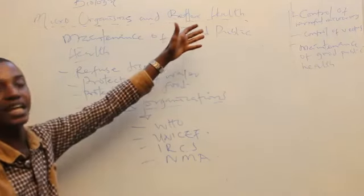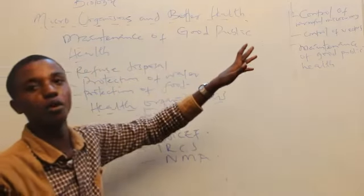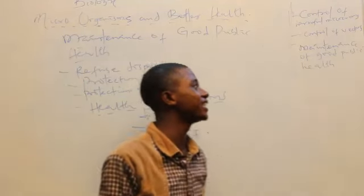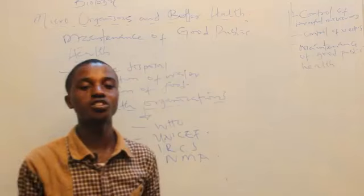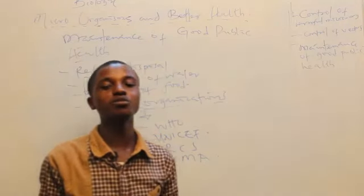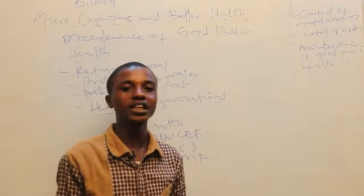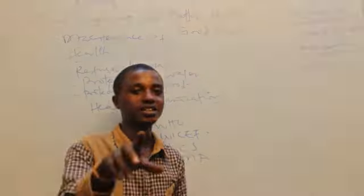Let's take a look at the highlights of the outlines again. Number one: control of harmful microorganisms. Number two: control of vectors. And lastly: maintenance of good public health. As usual, a question will pop up on your screen. Try as much as possible to attend them, and it is always advisable for you to go through the video again so as to update your knowledge. Remember this.